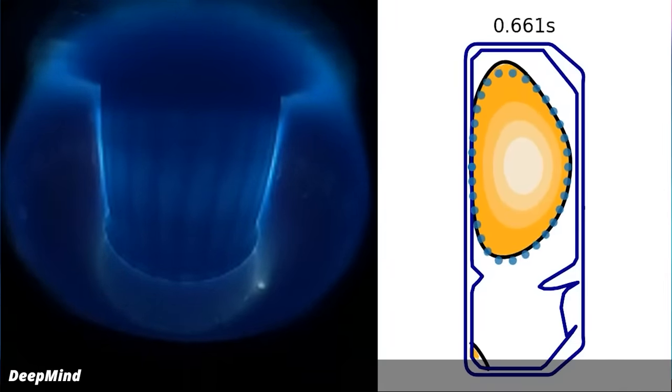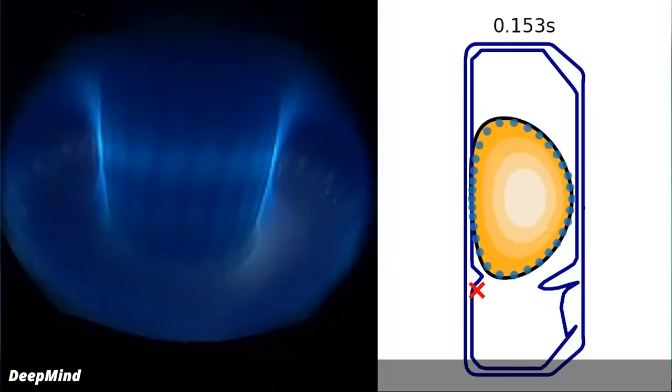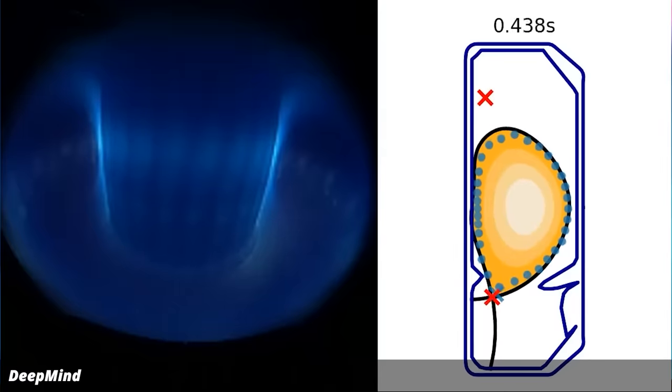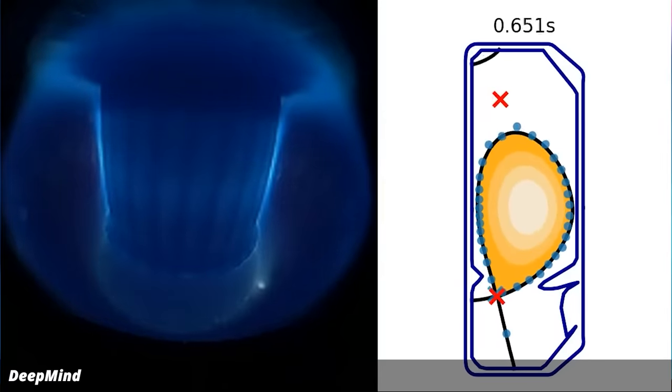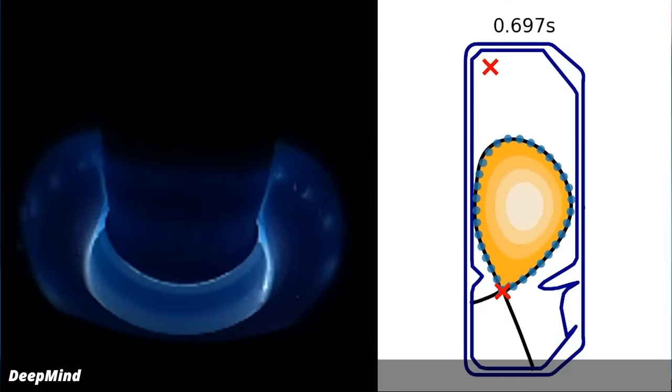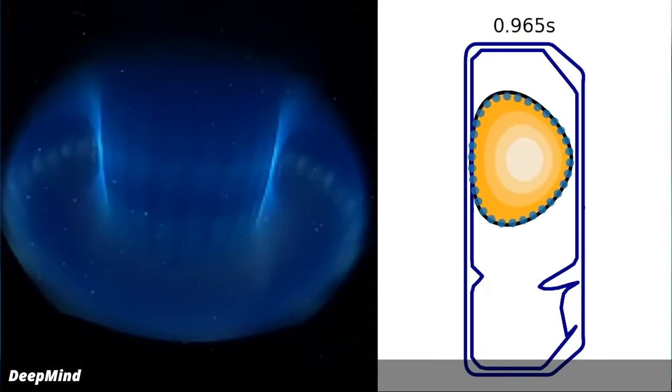And their AI control of the plasma worked out beautifully. In this movie on the left, you see the measurement of the actual plasma inside the tokamak. On the right, you see the reconstructed shape of the plasma. The DeepMind people were able to coax the plasma into a large number of different shapes, including a triangular one and two separate droplets.